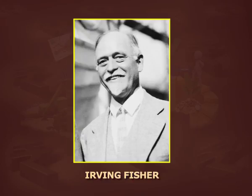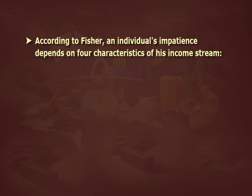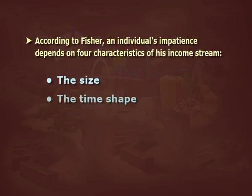Fisher's Intertemporal Choice Model. Irving Fisher developed the theory of intertemporal choice in his book Theory of Interest (1930). Fisher's model showed how rational, forward-looking consumers choose consumption for the present and future to maximize their lifetime satisfaction. According to Fisher, an individual's impatience depends on four characteristics of his income stream: the size, the time shape, the composition, and risk. Besides this, foresight, self-control, habit, expectation of life, and bequest motive are the five personal factors that determine a person's impatience, which in turn determines his time preference.